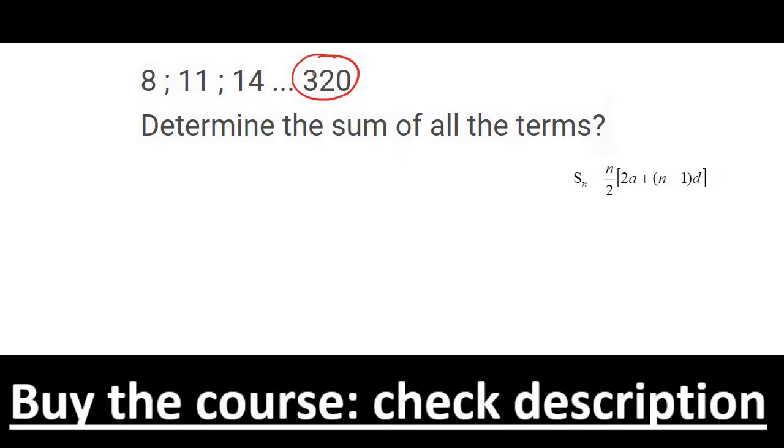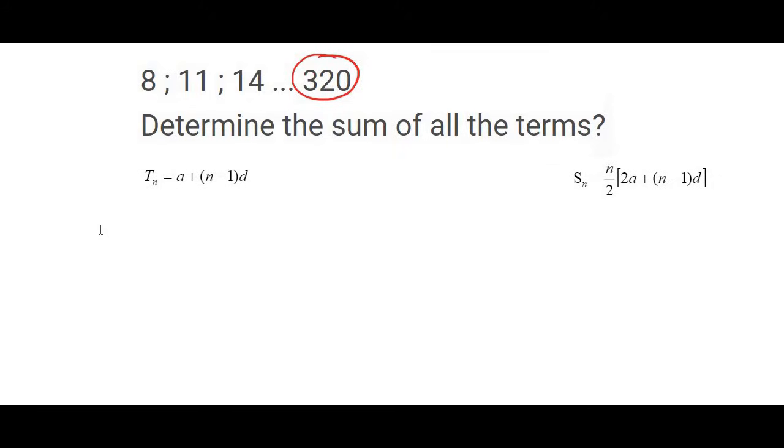We then use the TN formula. We know that the last term is equal to 320, so we can say 320 equals A, which is 8, plus N minus 1 times the common difference of 3.